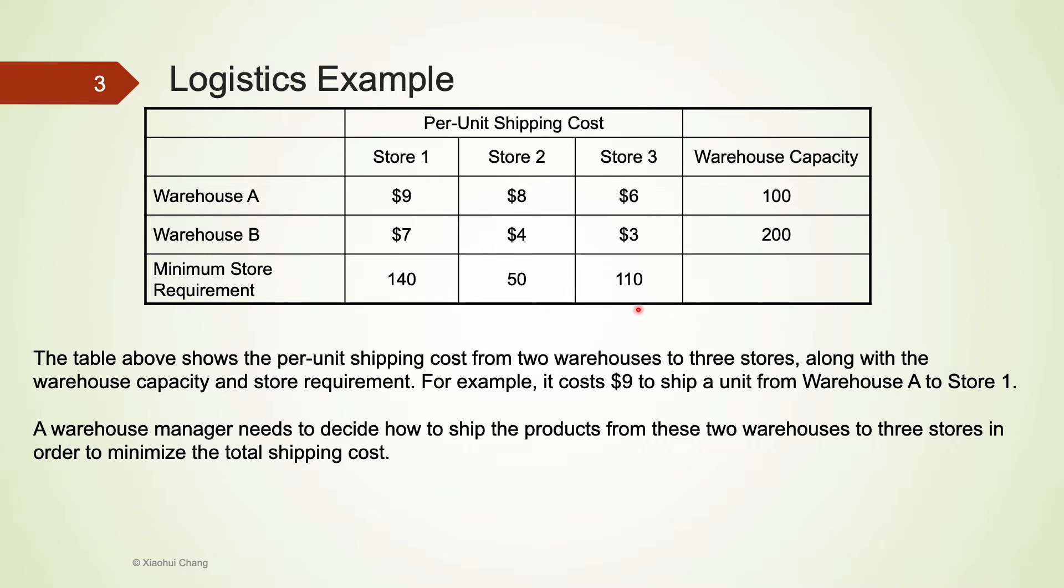For example, it costs $9 to ship a unit from warehouse A to store 1, but only costs $3 to ship a product from B to 3. To minimize the shipping cost, our first thought may be ship all products from B to 3. Unfortunately, warehouse B has a capacity of 200 units, and all stores have a minimum store requirement. So this problem is actually much more complicated than what we thought.